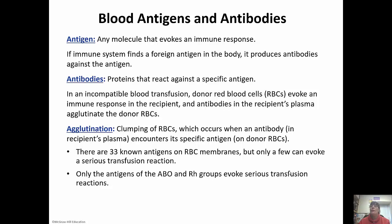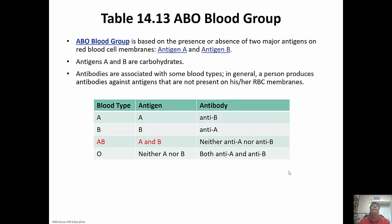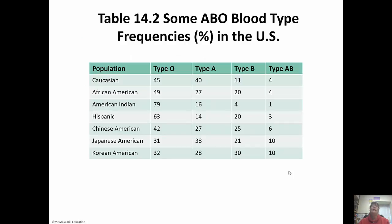Only the antigens of the ABO and RH groups evoke serious transfusion reactions. The ABO blood group is based on the presence of antigen A or antigen B — these are carbohydrates. A person produces the antibody against whatever antigen isn't present. So: A blood type has the A antigen and antibody B; B blood type has the B antigen and antibody A; AB blood type has both antigens and no antibodies; type O has no antigens and both antibodies. Type O is the most common; type AB is the most rare.